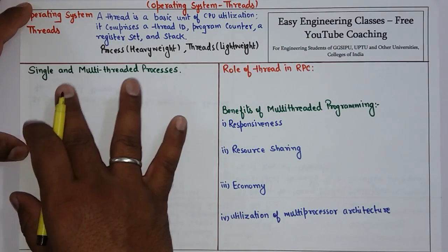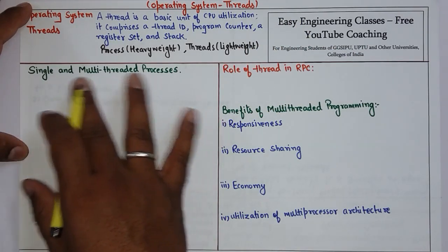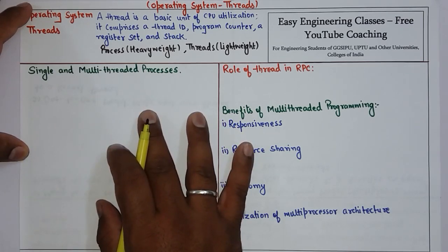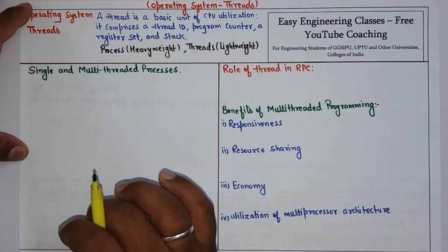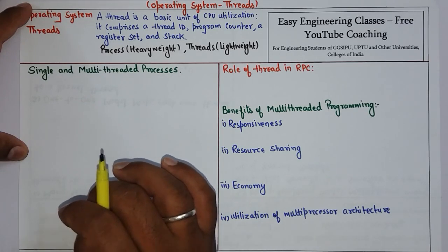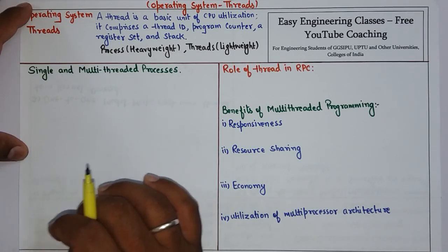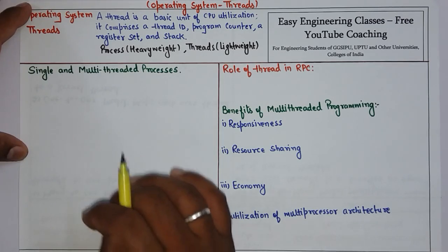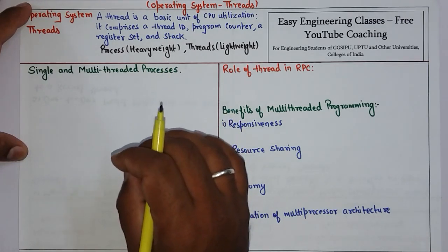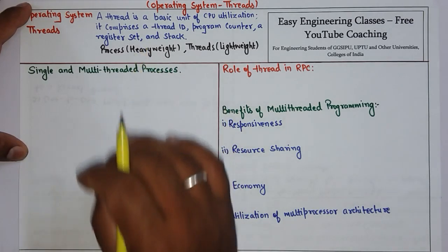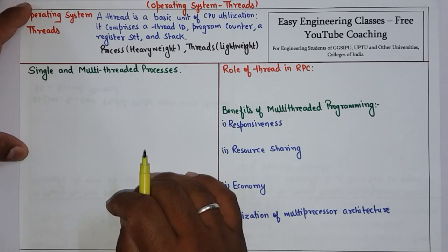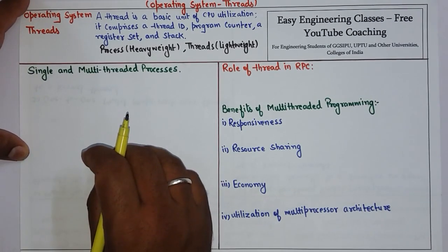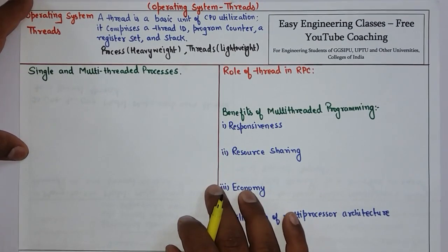There are two different kinds of threading processes: single and multi-threaded. Traditionally, a process has a single thread of control and is known as a single threaded process. If a process has multiple threads of control then it is called a multi-threaded process, and that multi-threaded process can be used to perform multiple tasks at a time.